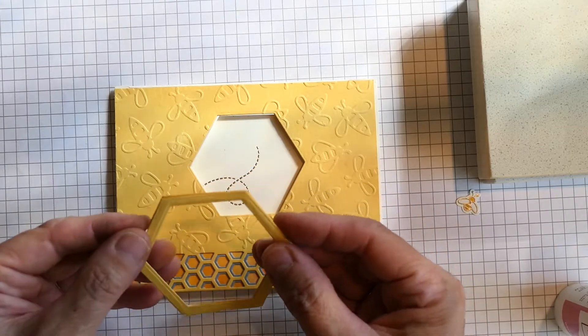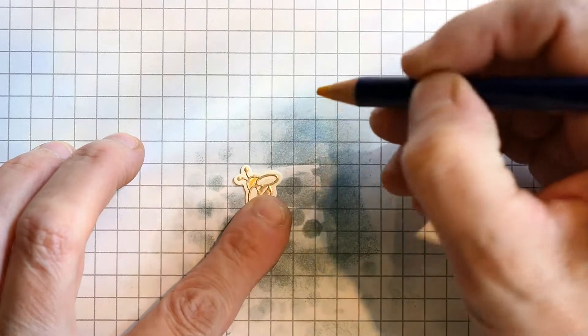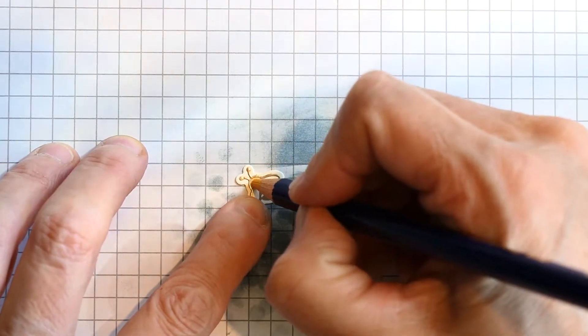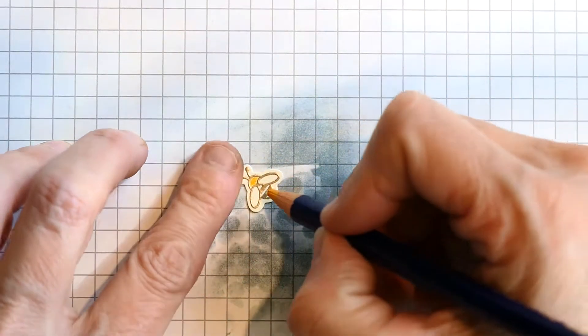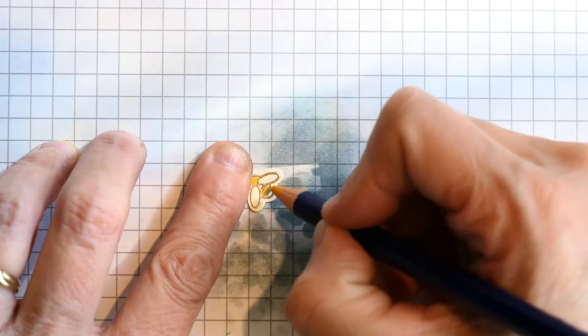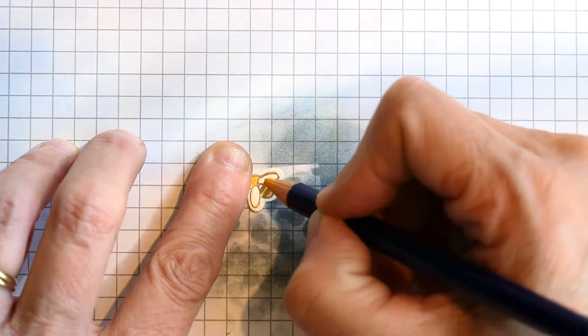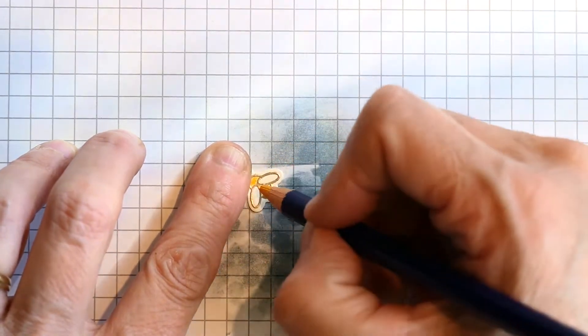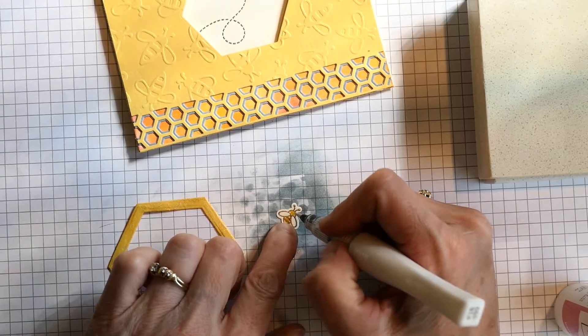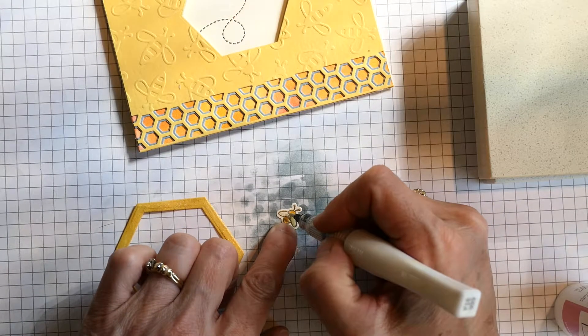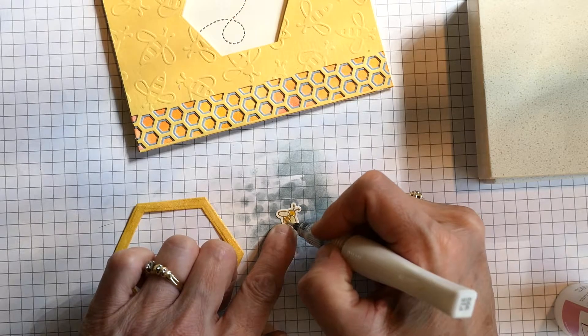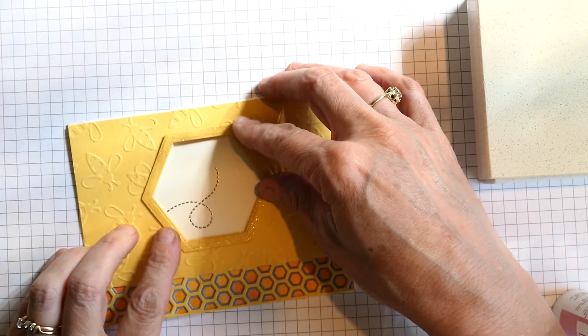Next I glued two of the hexagon layers together to create some extra dimension. I stamped and die-cut the bee using the Little Kindness stamp set and colored it in. This is actually an Inktense pencil, and then I went over it with Wink of Stella. I also went over the hexagon frame with Wink of Stella before I attached it.